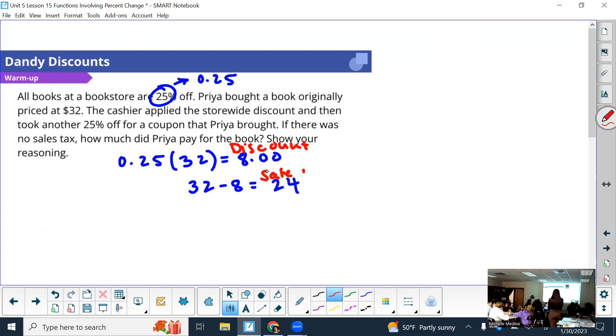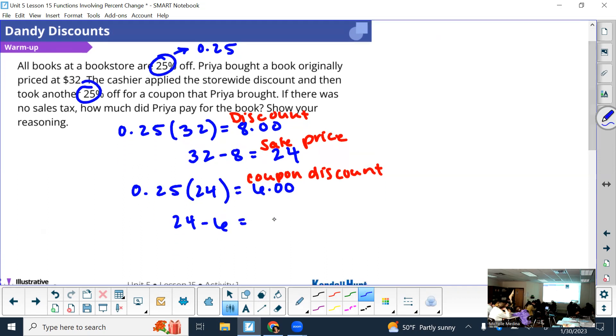Okay. So I'm going to subtract it from the original price. 32 minus 8 is 24. So this is my sale price. However, she has a coupon. So the coupon is worth how much off? 25%. So I'm going to again take 25% the equivalent decimal, which is 0.25. And what am I going to times it by now? 24. What is 25% of 24? $6. So that's an additional discount.